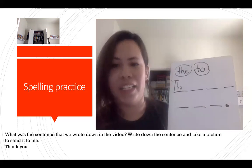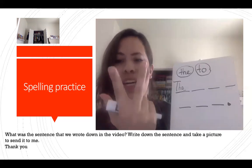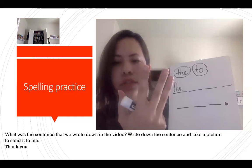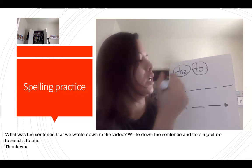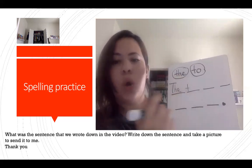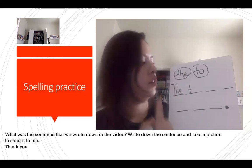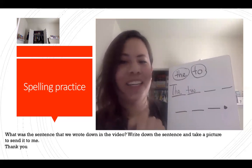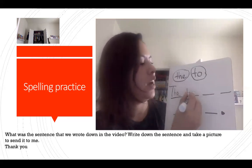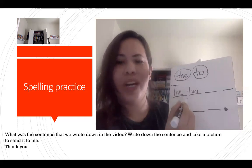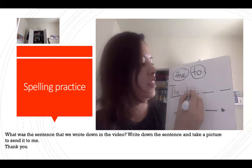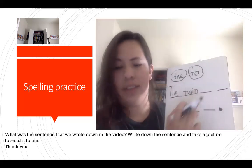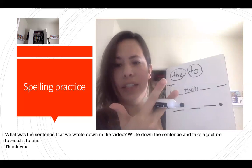The twin — four sounds in that word. The first one: T-T. Then W, then I ('eagle I'), then N. Twin — T-W-I-N. The twin had — H-A-D.